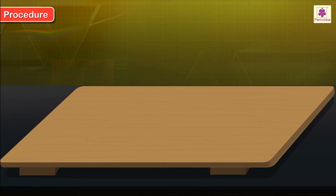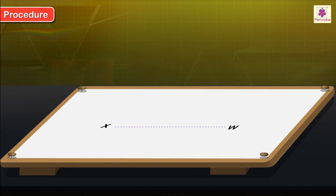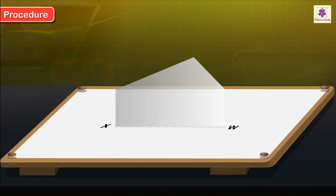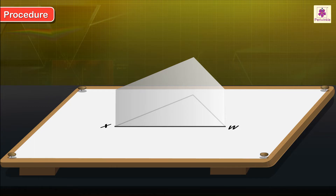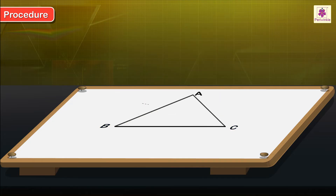Precautions and procedure: using drawing pins, fix a sheet of drawing paper to a drawing board. Draw a straight line XW along the center of the sheet. Place the triangular face of the prism on the drawing paper such that one of its edges lies along the line XW. Trace the outline of the triangular face of the prism on the drawing paper and label it as triangle ABC, where side BC lies on line XW.